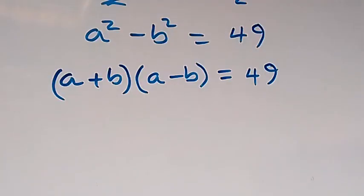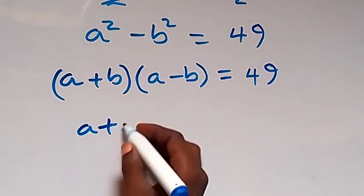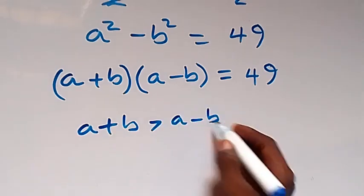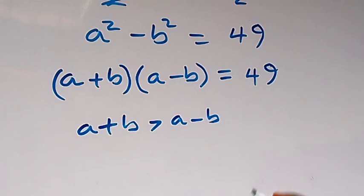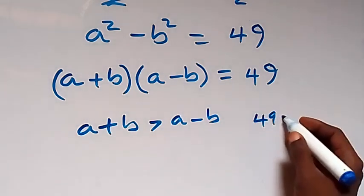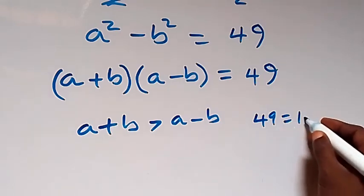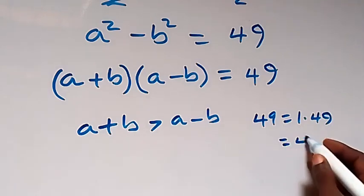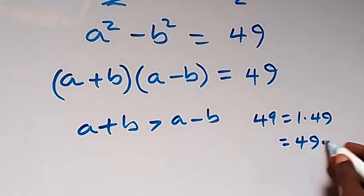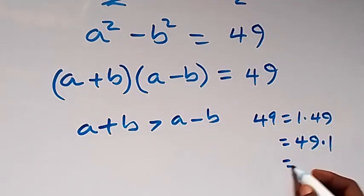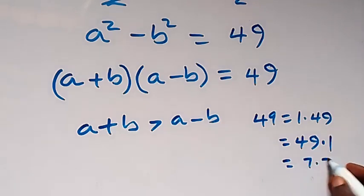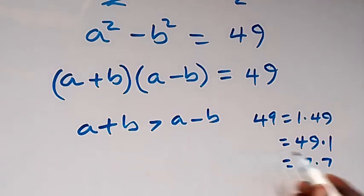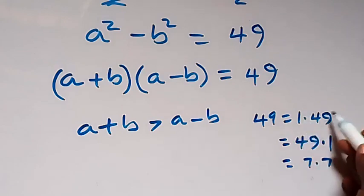And what we have here, a plus b is greater than a minus b and from here we can write 49 times 1 times 49 or we can write it as 49 times 1 or we can write this as 7 times 7. Then from what we have here that a plus b is greater than a minus b it means the first one should be greater than the second.